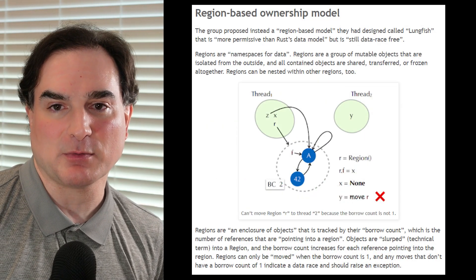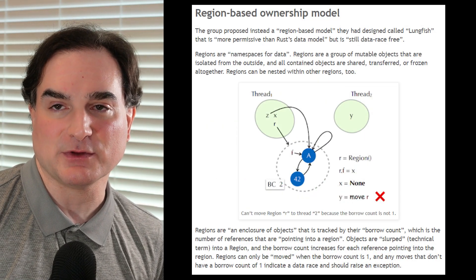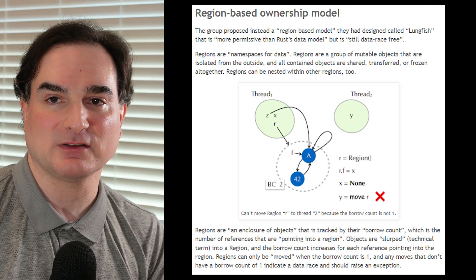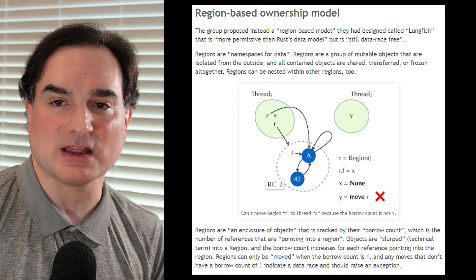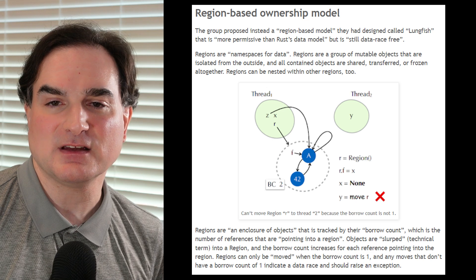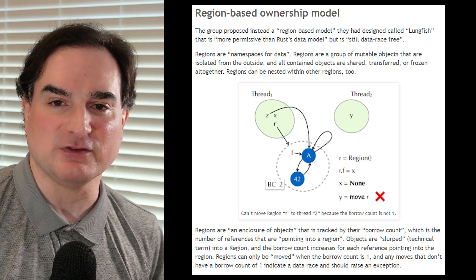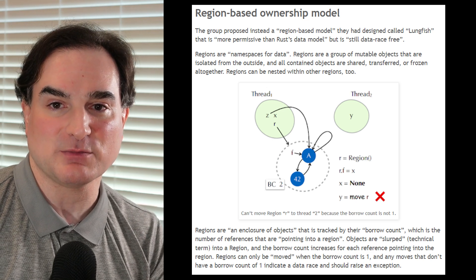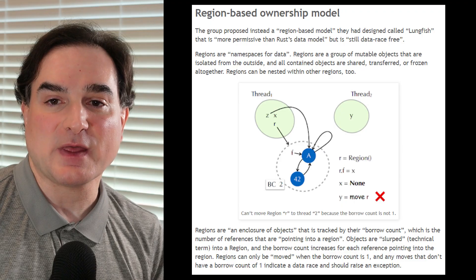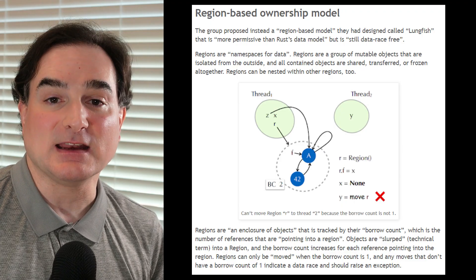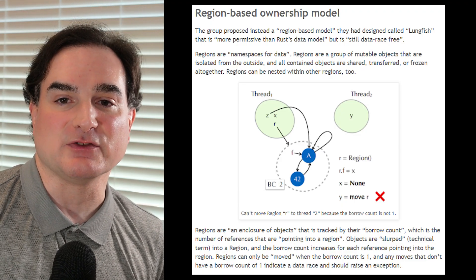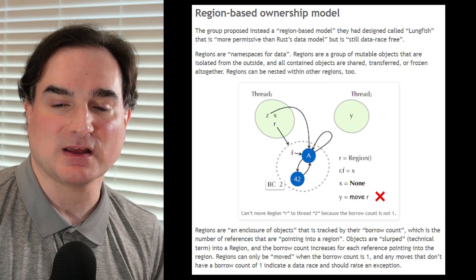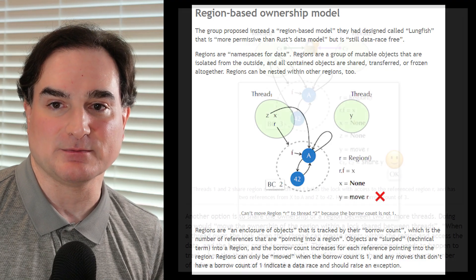One of the proposals raised for how to solve this problem uses what's called a region model for Python objects, and it's all being done under the code name Lungfish. The idea behind a region is that it's a way to gang together a group of mutable objects in Python so that they have to be handled as a group. Anything that wants to work with objects in the region has to become part of the region, and once it's done with that work, it can be released from that region.